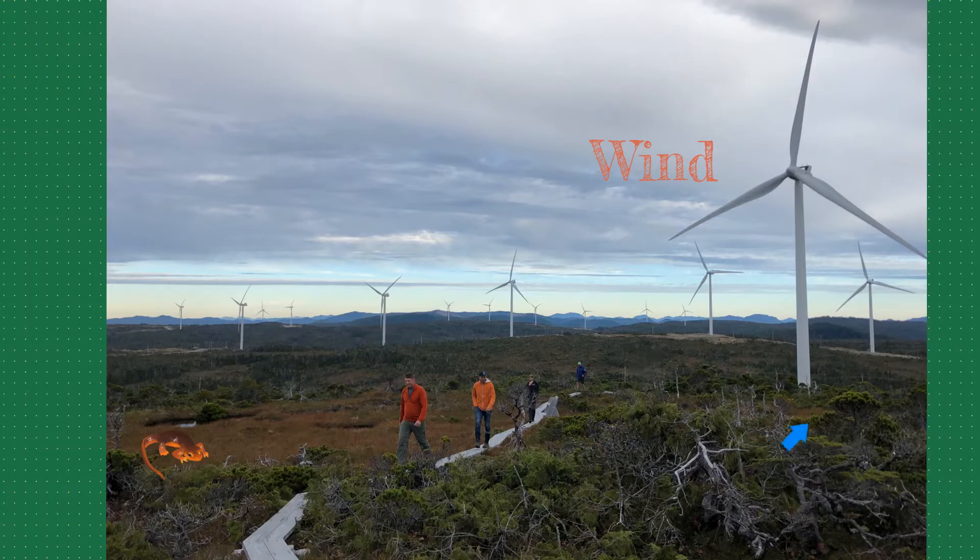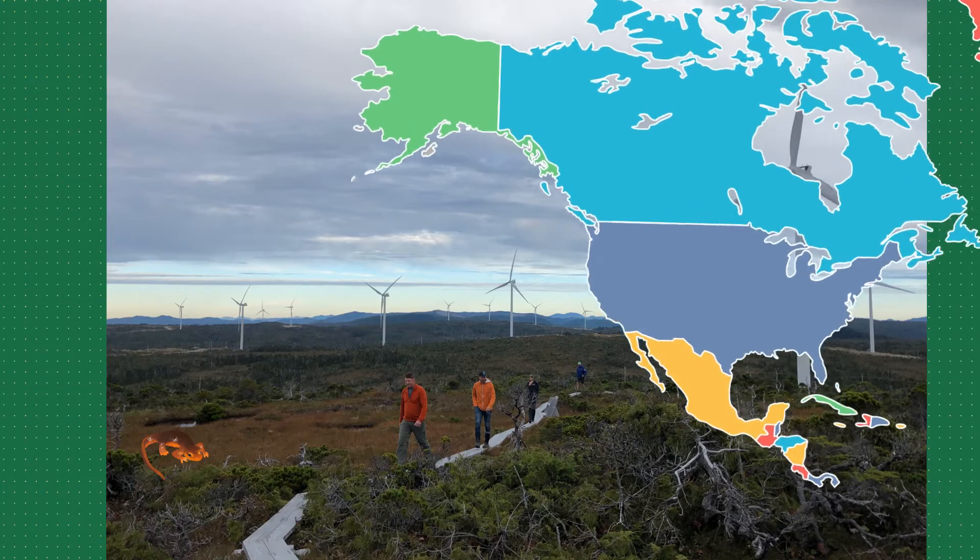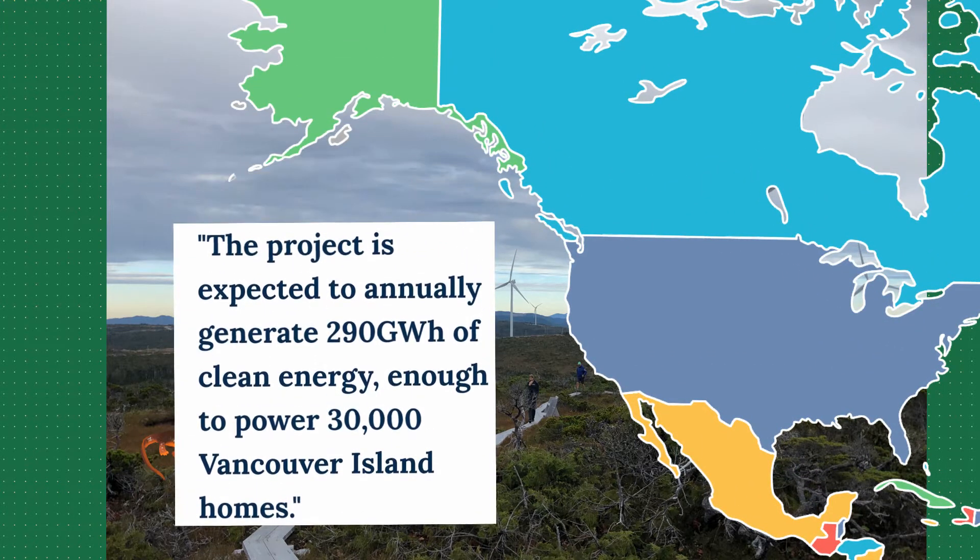So wind can be pretty cool, especially if you're on the north side of Vancouver Island up by Port Hardy. This is Cape Scott Wind Farm and they produce enough electricity to power 30,000 homes on Vancouver Island. This is actually about half the island.